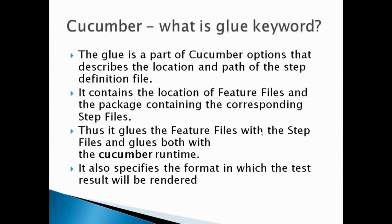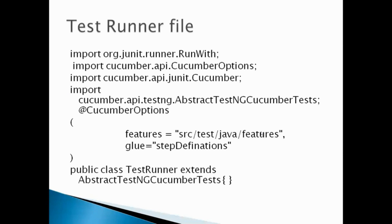Next is a Cucumber-related question: what is the glue keyword? This is very important — if you haven't worked on Cucumber it will be difficult to explain. Glue is a part of the Cucumber options that describes the location and path of the step definition file. It acts as a redirect. Here you can see a sample test runner file showing how glue is used with the step definition path.